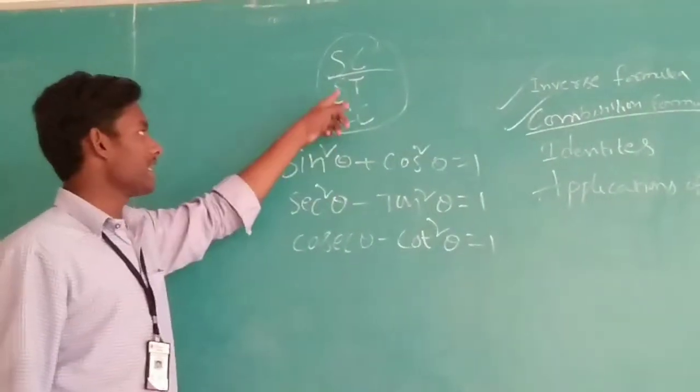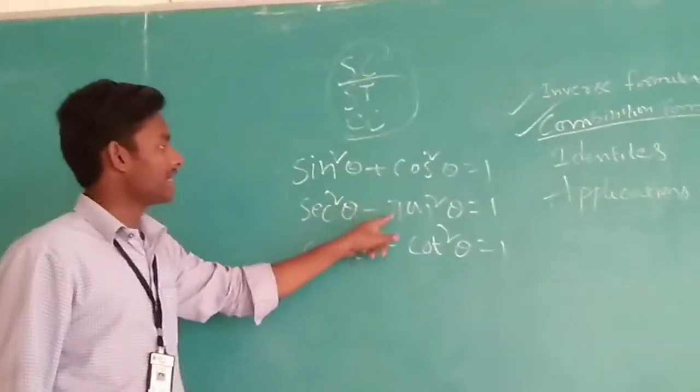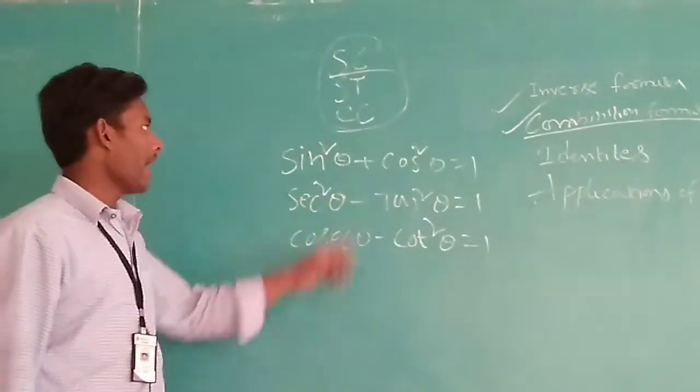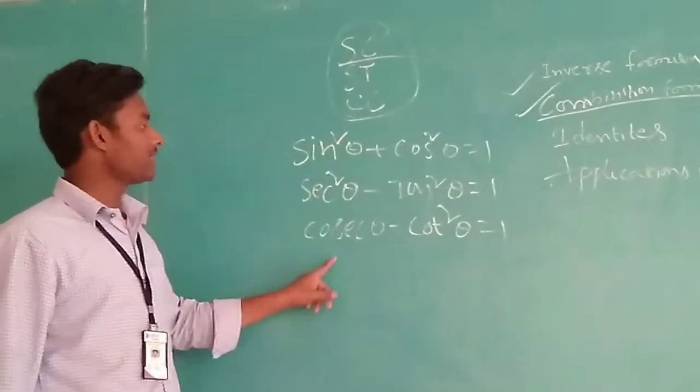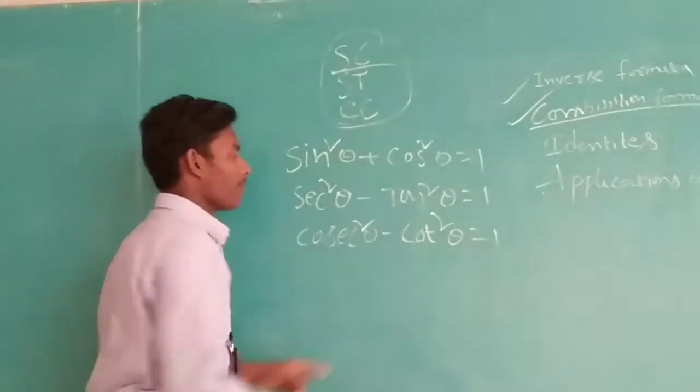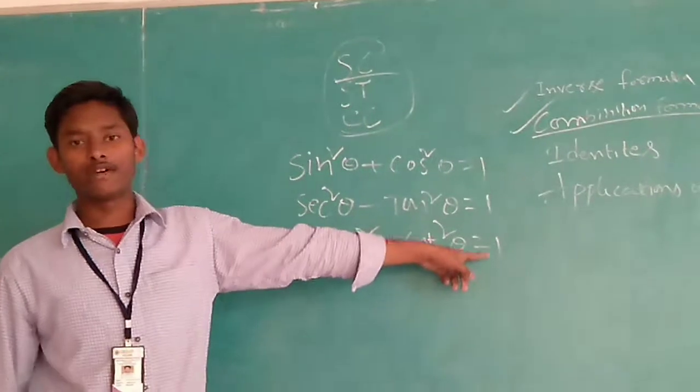And second one, ST, secant square theta minus tan square theta equals 1. And finally, cosecant square theta minus cot square theta equals 1.